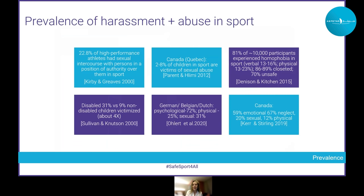Athlete impacts span many domains — performance, ability to function in or outside sport, relationships with family and friends, and cognitive and psychological health. Not all athletes respond the same way; outcomes depend on the type, nature, extent, and duration of abuse, as well as the individual athlete's makeup. Sometimes teammates of victims are also affected. And the impacts can often be devastating and long-lasting — well beyond when the abuse ends.